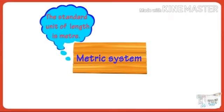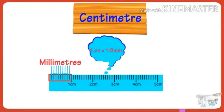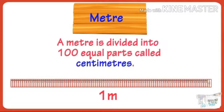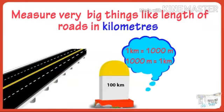The standard unit of length is meter and the smallest unit of length is millimeter. 10 millimeters is equal to 1 centimeter and 100 centimeters is equal to 1 meter. A meter is divided into 100 equal parts called centimeters. The highest unit of length is kilometer, and we use kilometers while measuring the distance from one place to another.